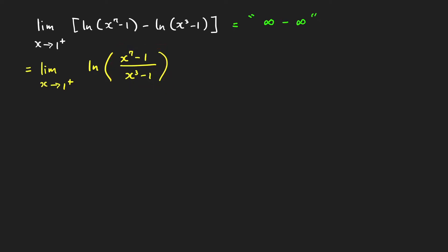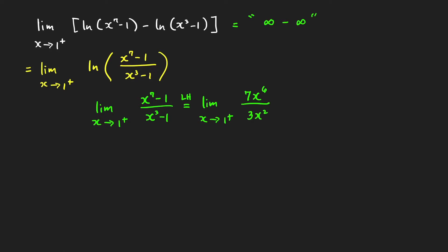So we can apply L'Hôpital's rule. We compute first the limit as x approaches 1 from the right of the expression inside the ln. Applying L'Hôpital's rule, we get the limit as x approaches 1 from the right of the derivative of the numerator, which is 7x⁶, over the derivative of the denominator, which is 3x². We can simplify by canceling two copies of x, and clearly the limit is just equal to 7 over 3.